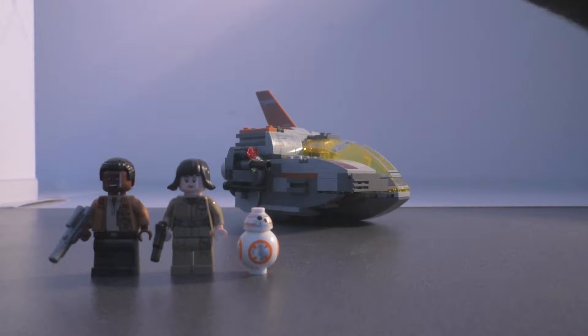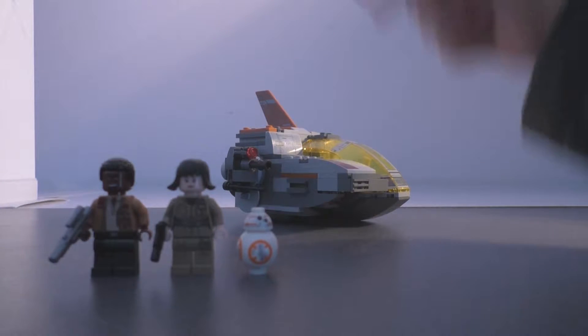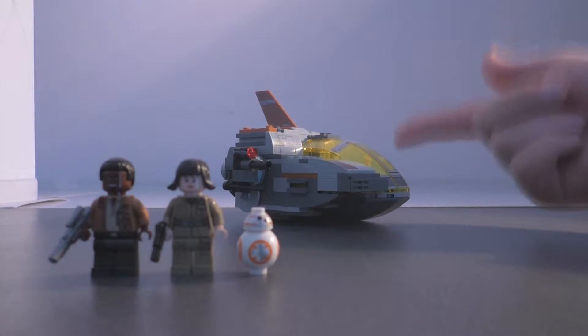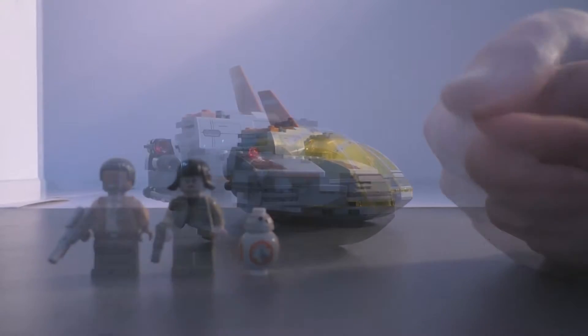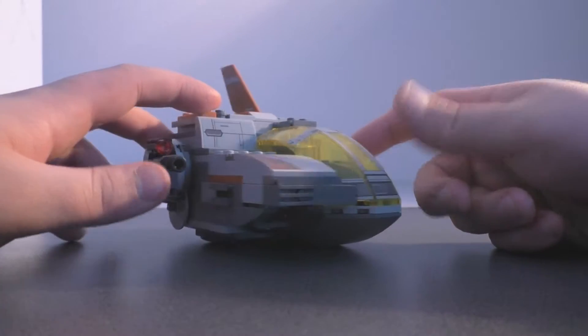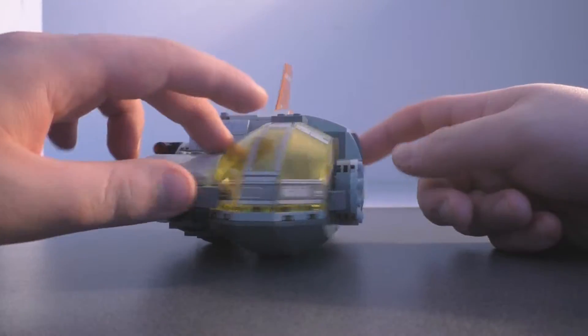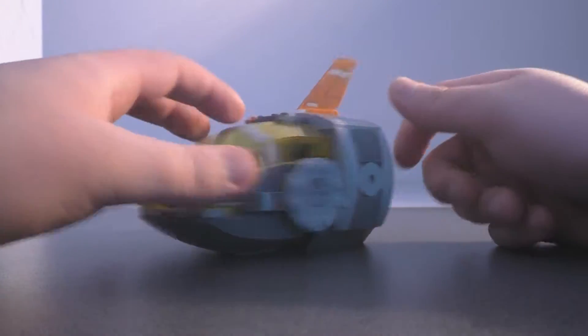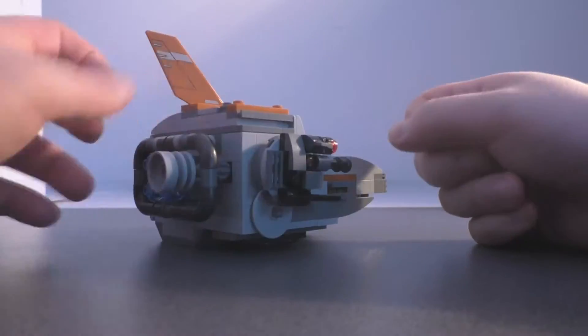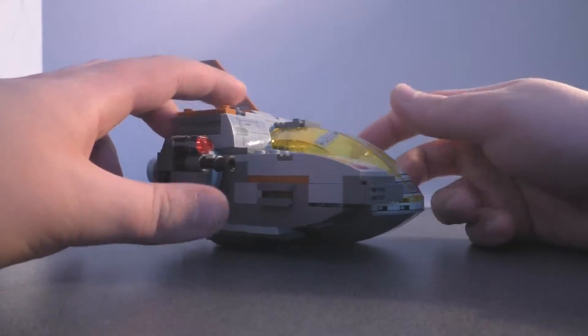It comes with three minifigures and one vehicle, so let's take a look at the vehicle first. This vehicle is called the Resistance Transport Pod and it is really well done in the design.